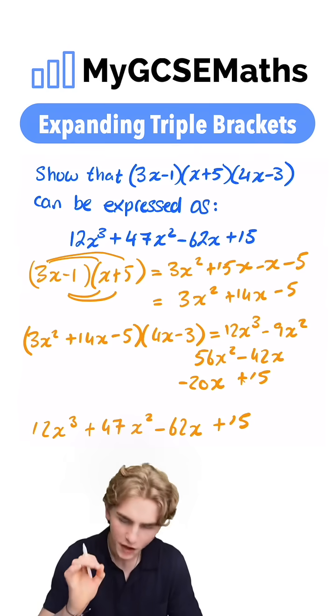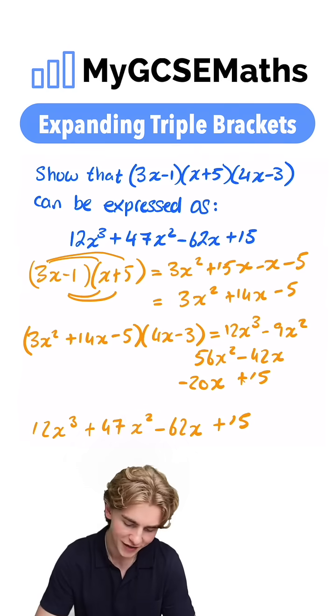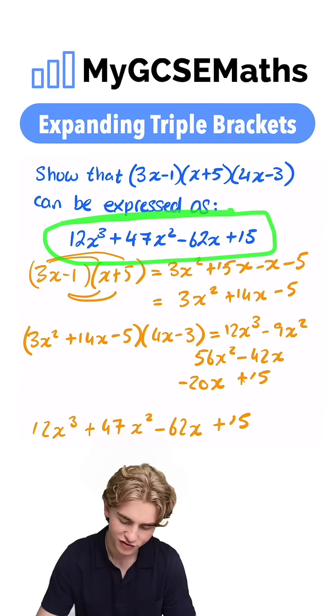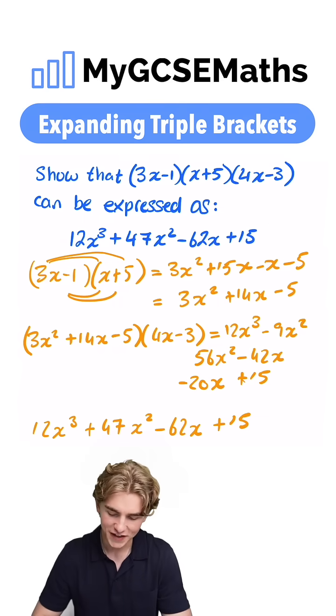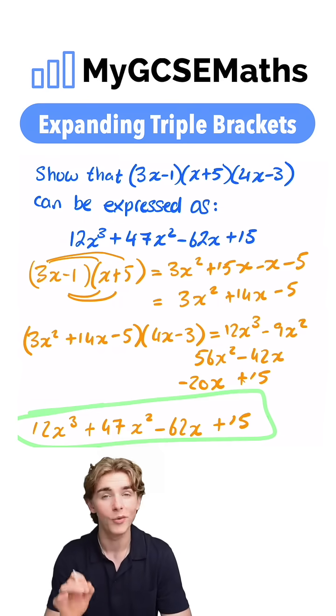And the beauty of this question is you can check if you're right. Are we correct? Did we get 12x cubed plus 47x squared minus 62x plus 15? Yes, we did, so we know we must be right.